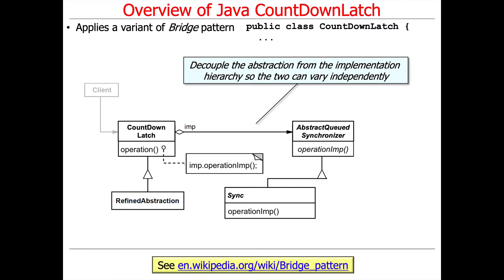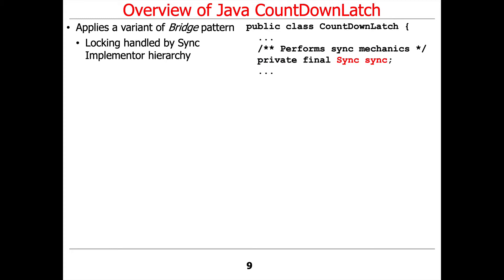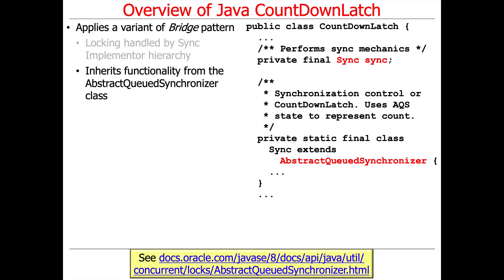As you'll see, the CountDownLatch doesn't use the full-blown implementer hierarchy that we've used in some of the other Java synchronizers, such as Java ReentrantLock, Java Semaphore, and Java ReentrantReadWriteLock. It does, however, use the sync implementer hierarchy to handle the locking that it does need.